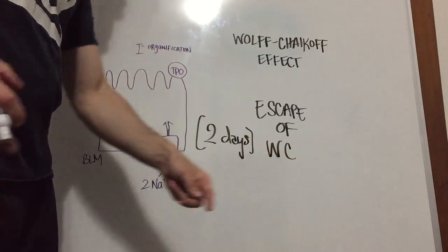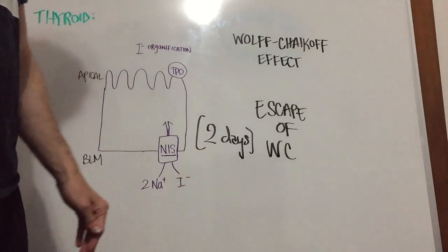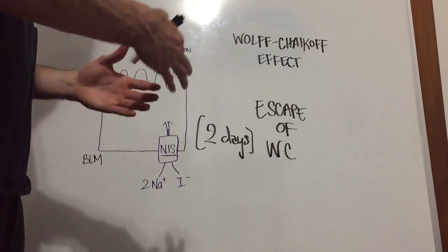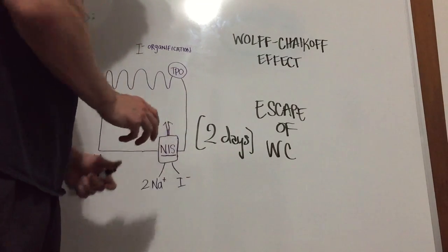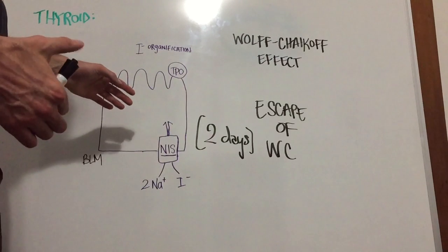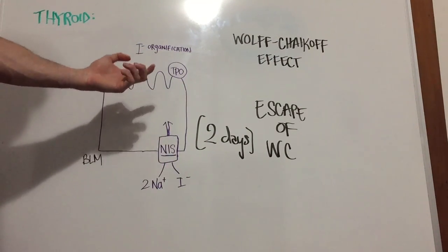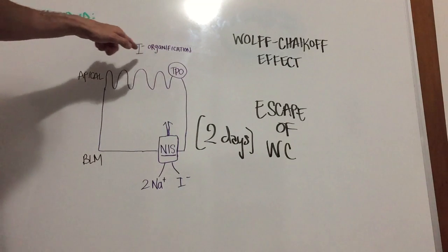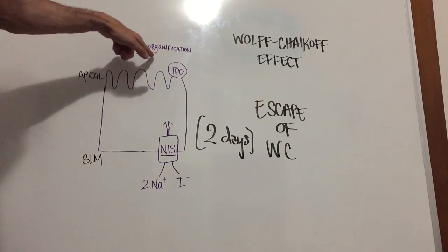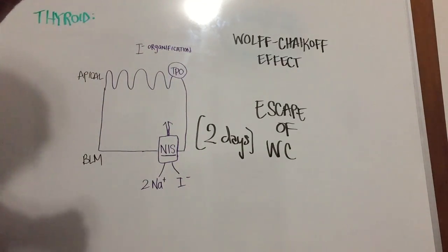So now we have the escape from Wolff-Chaikoff. After two days of giving exceedingly high levels of iodide, the body has reduced the NIS as much as possible. But at a certain level, which is at two days, iodide will eventually be able to be let back into the cell and the production and organification of iodide to iodine will resume and thus T4 and T3 will be able to be made again.